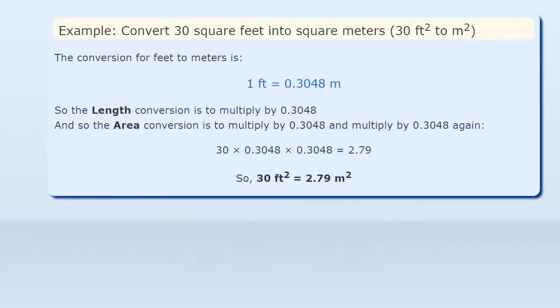Convert thirty square feet into square meters. The conversion for feet to meters is one foot equals 0.3048 meters. So the length conversion is to multiply by 0.3048, and so the area conversion is to multiply by 0.3048 and then 0.3048 again. 30 by 0.3048 equals 2.79. So, thirty square feet equals 2.79 square meters.